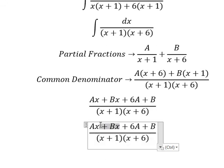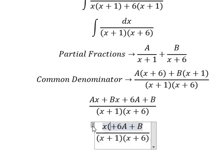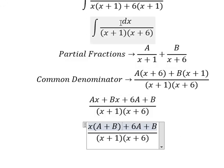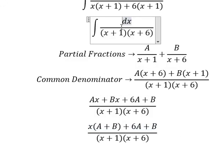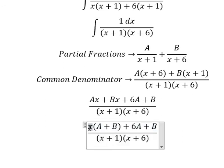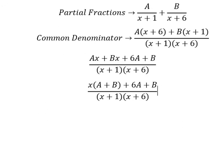This one we can do factorization. Now if we look carefully at the coefficient, we just have only 1x. So 6A plus B equals to number 1. A plus B equals to number 0 because we don't have an x coefficient here. So we create the system of equations.